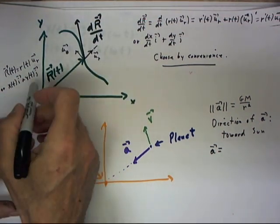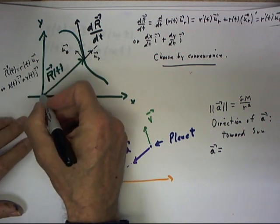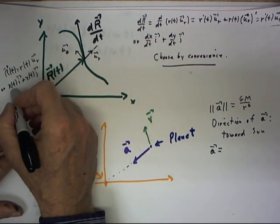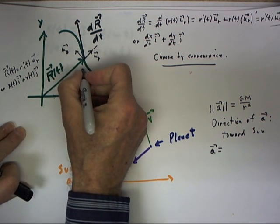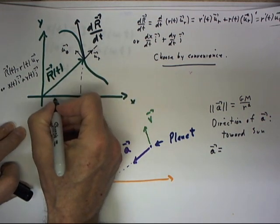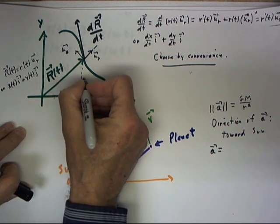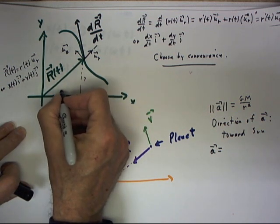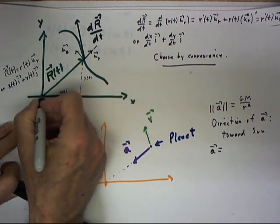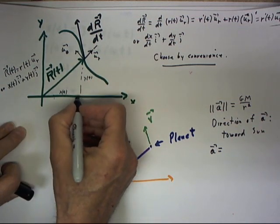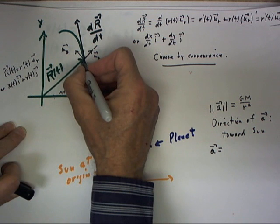And we have at least two different ways of representing our r of t vector. One way we started with x of t i plus y of t j, where here's our x and here's our y. If we just multiply x of t times i plus y of t times j, we get a vector here and a vector here that add up to this vector.